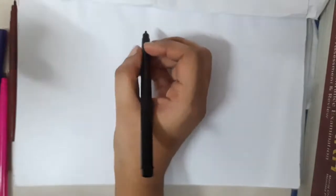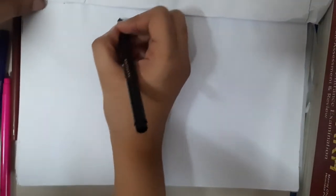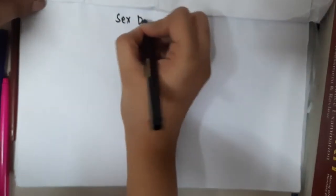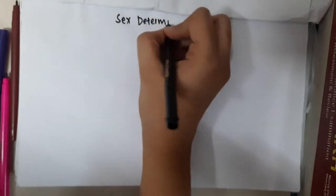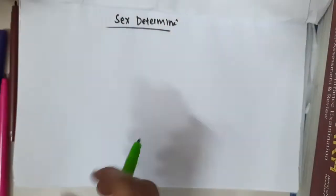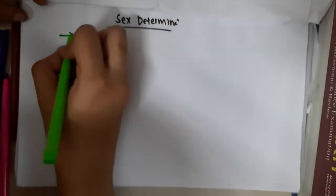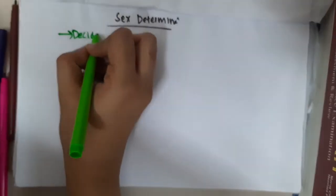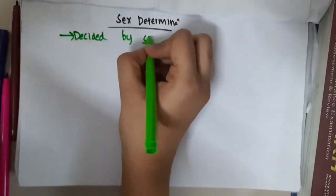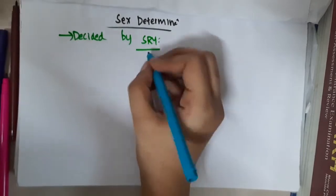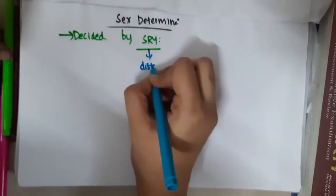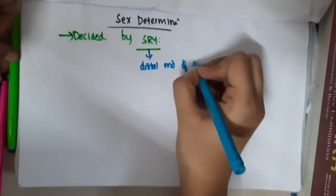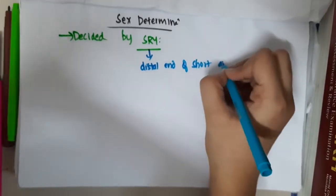Hello friends, let us now learn fundamentals of obstetrics. In this first, we will learn about sex determination. Sex determination is mainly decided by the gene which is called SRY gene. This SRY gene is seen in the distal end of short arm of Y chromosome.